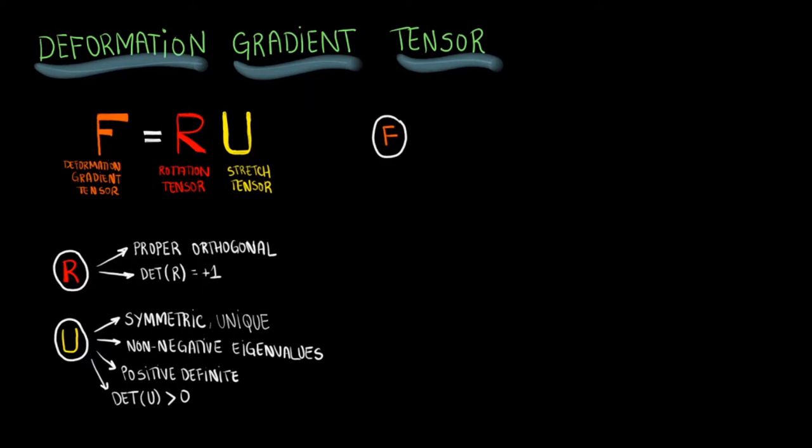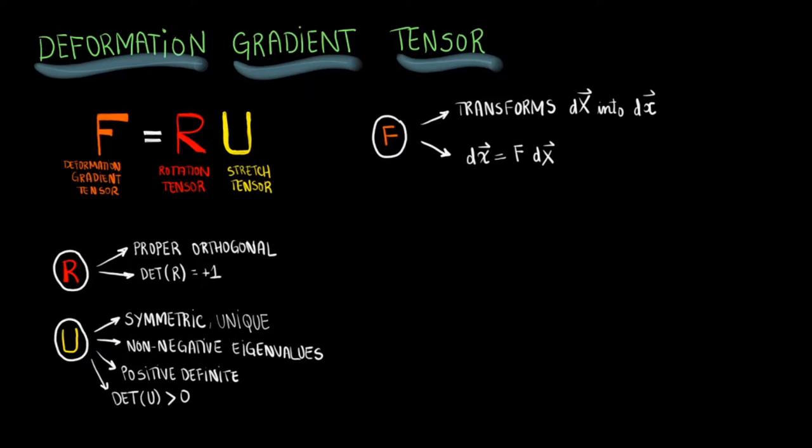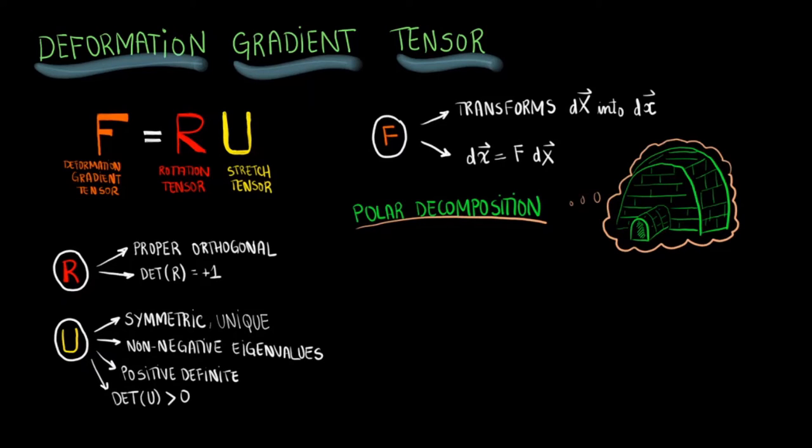Finally, we know that the deformation gradient tensor F transforms dX to dx, and aware of this, we can write the transformation equation as dx equals F times dX. We can now use polar decomposition to find expressions for the tensors R and U, which can be obtained from F.